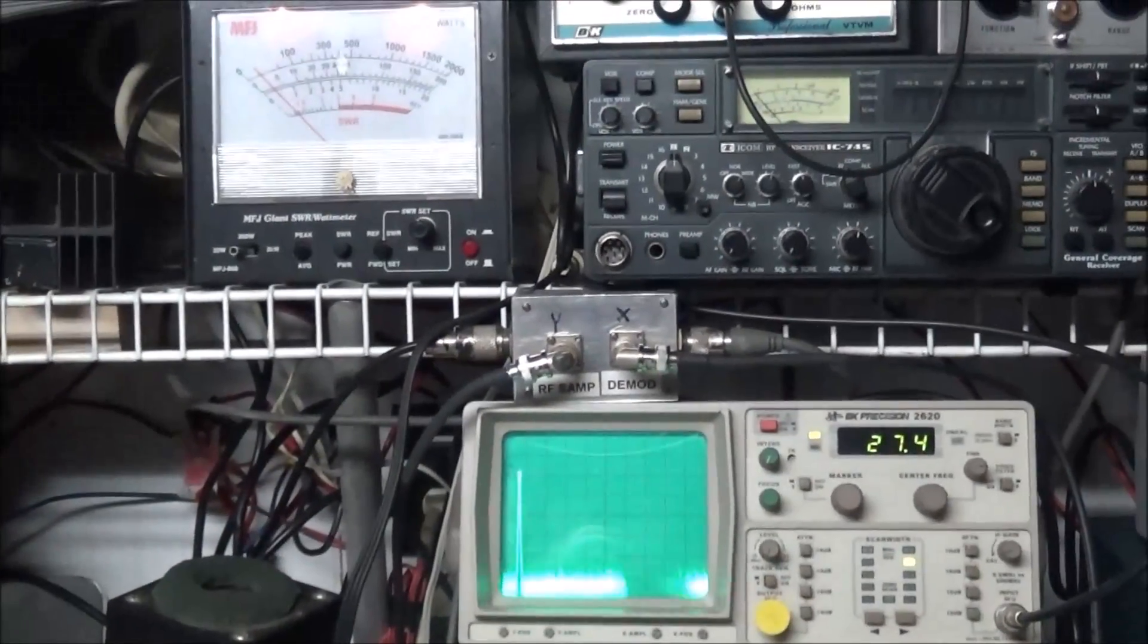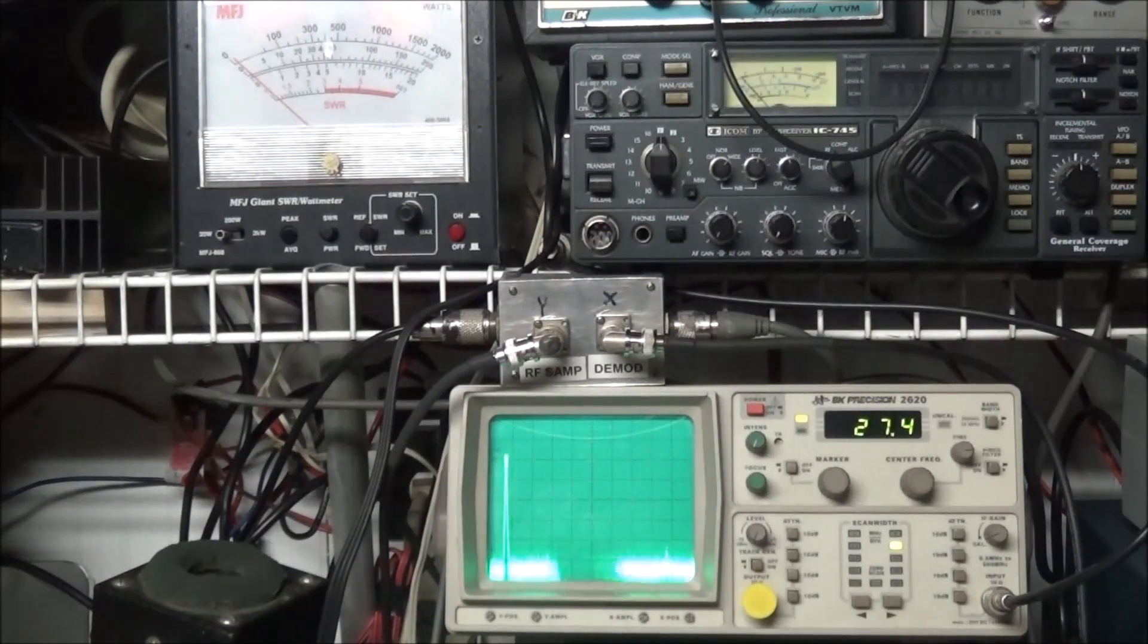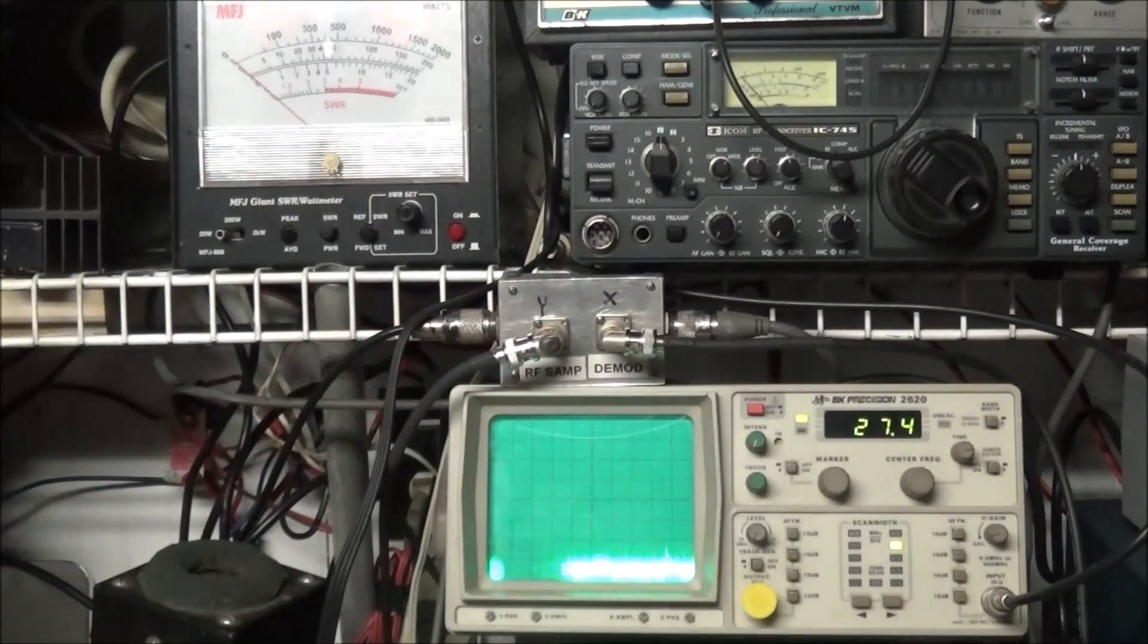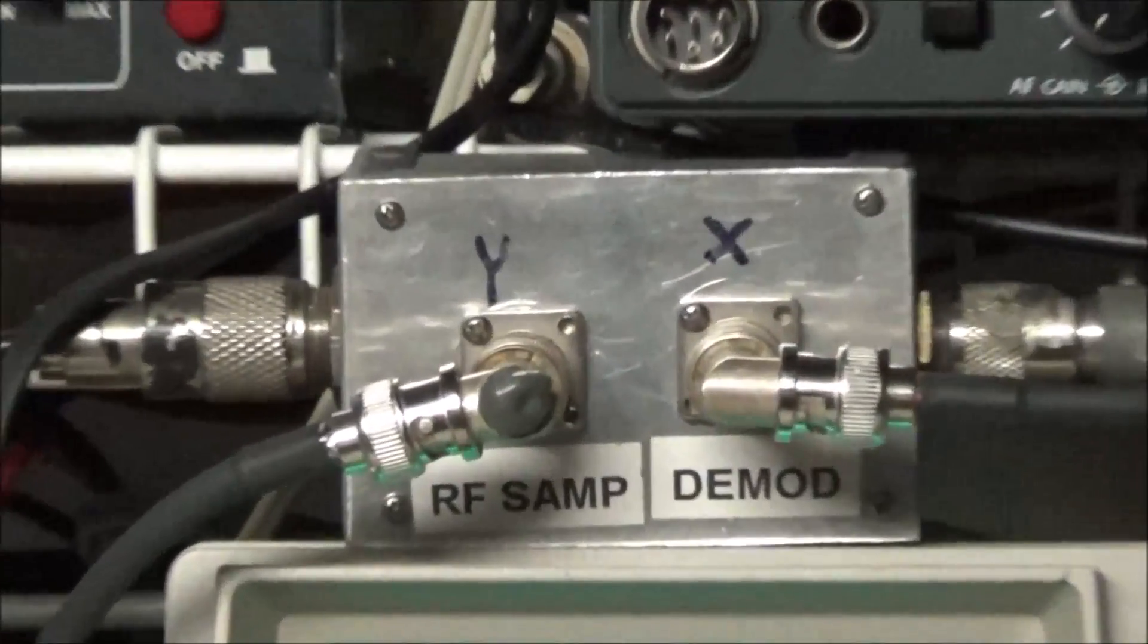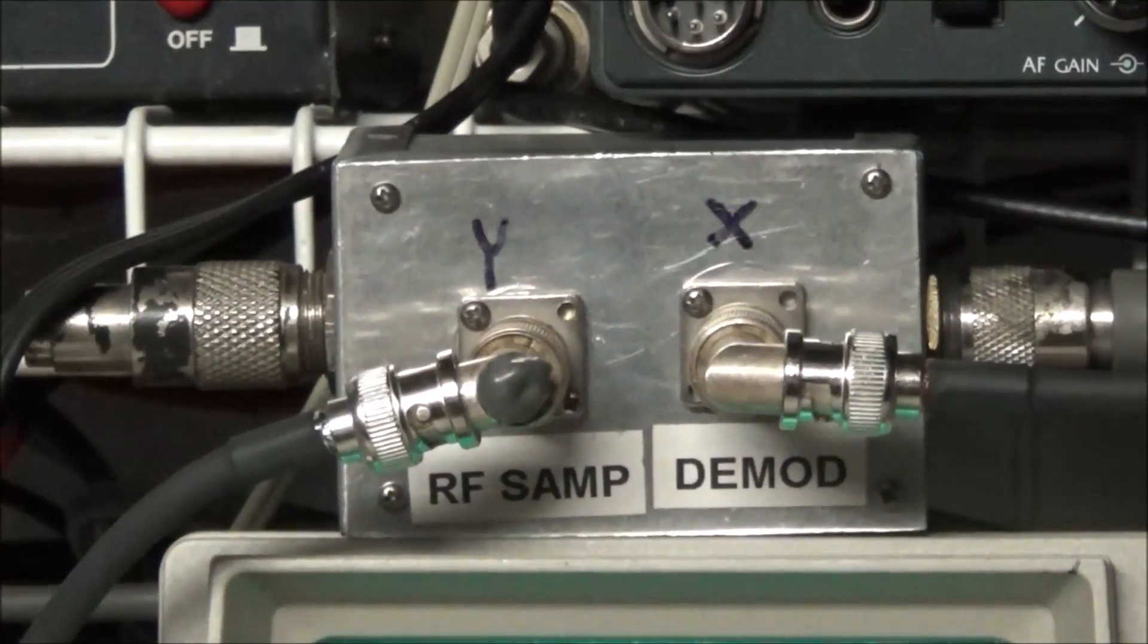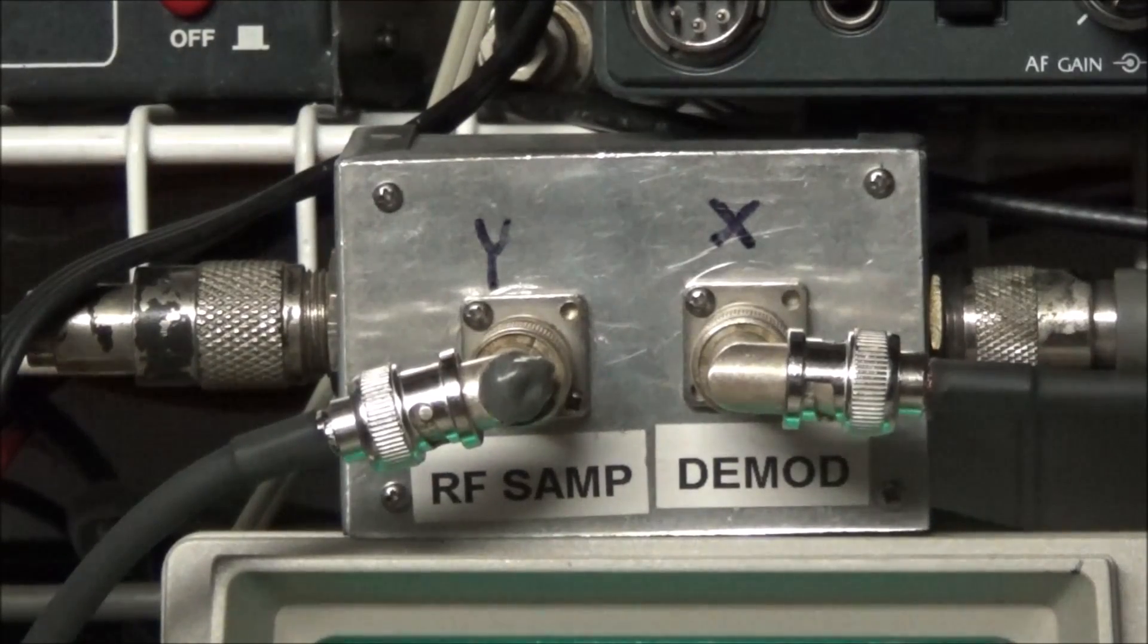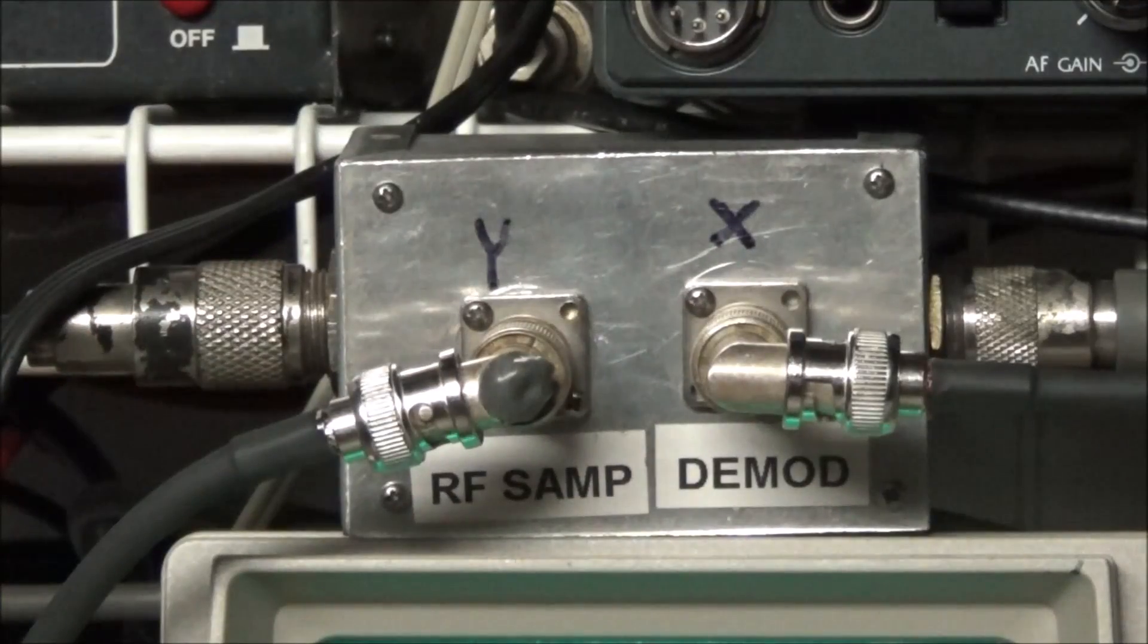So yeah, it's always good to watch your output and make sure it's clean. Now Alan did a video quite some time ago about monitoring your ham radio, and this works with any kind of radio. He showed the circuit, and what this is is an RF sampler with a demodulator port in it. So what you can do is sample your RF plus you can pick your modulation off.